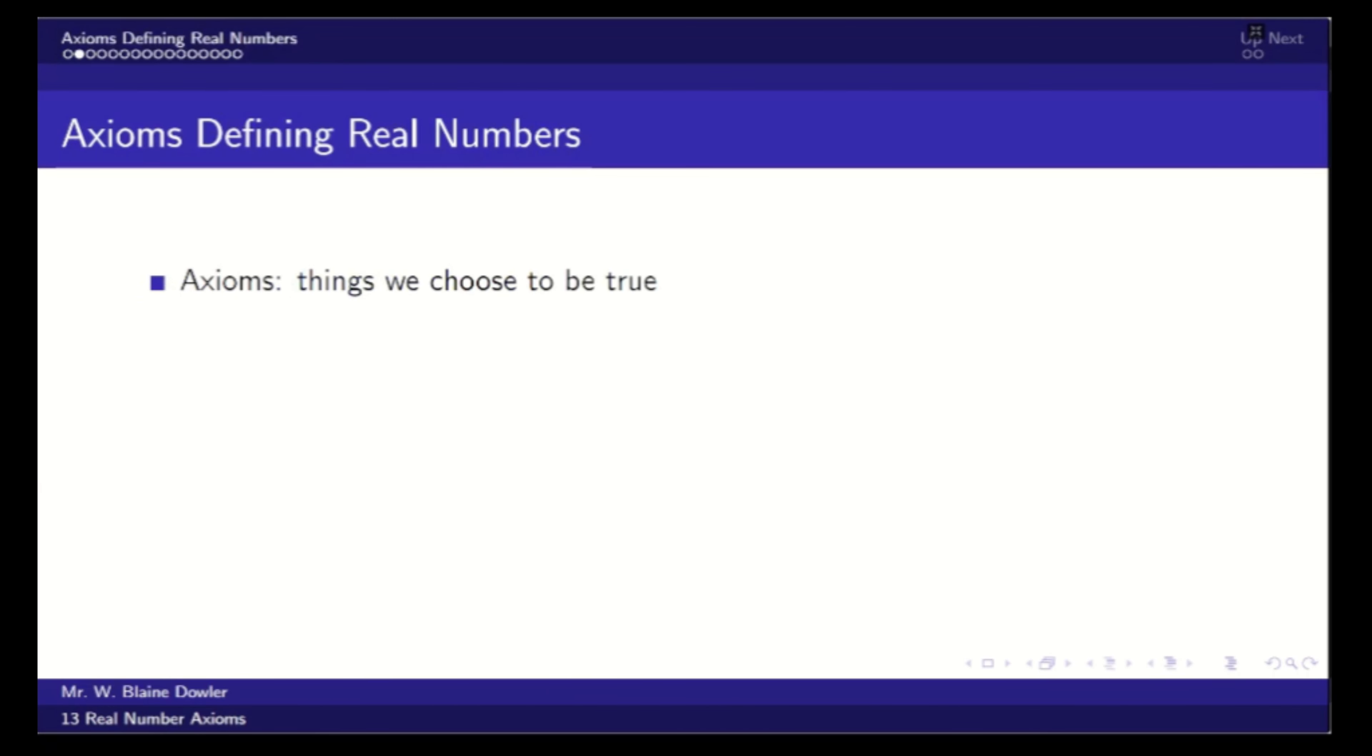Now, axioms in general are things we choose to be true. Sometimes they're not true in other systems. So these things don't have to be universally true. We just decide they're going to be true of the things we are working with right now. We can actually completely define real numbers with 13 of these axioms.